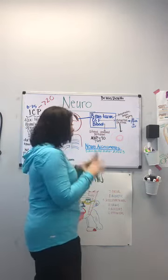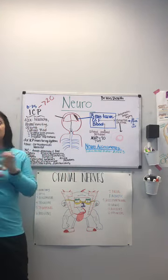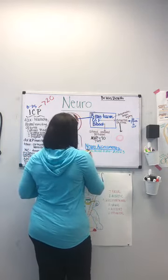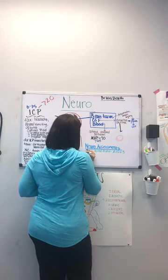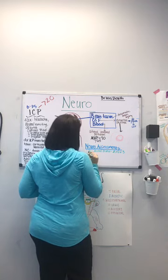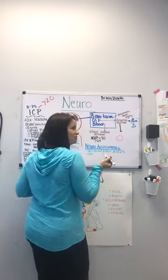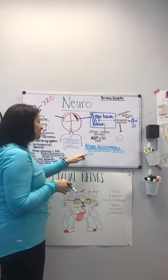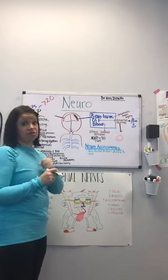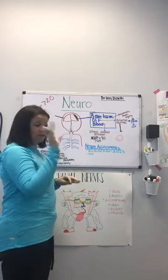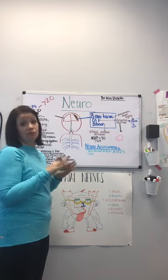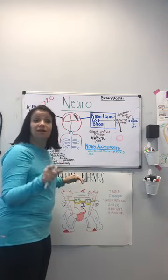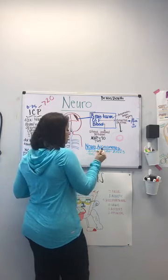A mini mental status exam quickly tells us the patient's neurological status — alert and oriented times three is what we're looking for. The next thing we can do quickly is assess the level of consciousness. These are all part of your quick primary survey — a quick head-to-toe to make sure the patient is alive. These are quick and easy things you can do very fast.